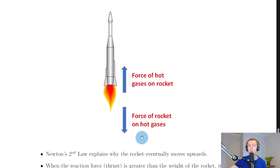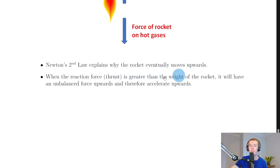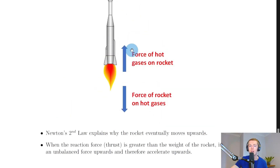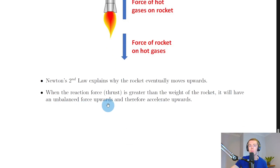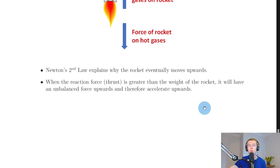A common mistake is thinking the action force is due to the hot gases pushing against the ground. Remember, once the rocket has launched it's not going to be anywhere near the ground, but these forces will still exist. We only talk about the rocket pushing out the hot gases and the hot gases pushing back on the rocket - no mention of the ground. Newton's Second Law explains why the rocket eventually moves upwards: when the reaction force (the thrust) is greater than the weight of the rocket, there's an unbalanced force upwards and the rocket accelerates.